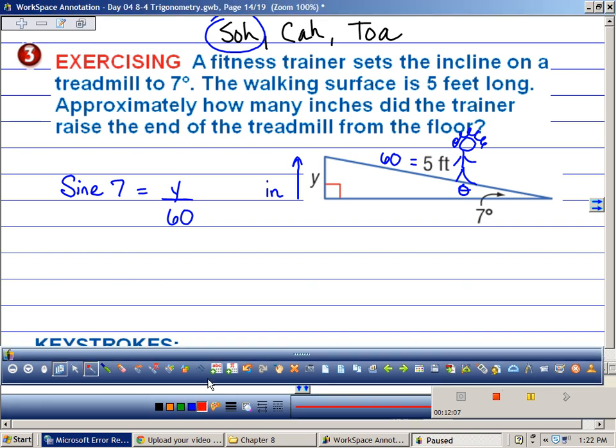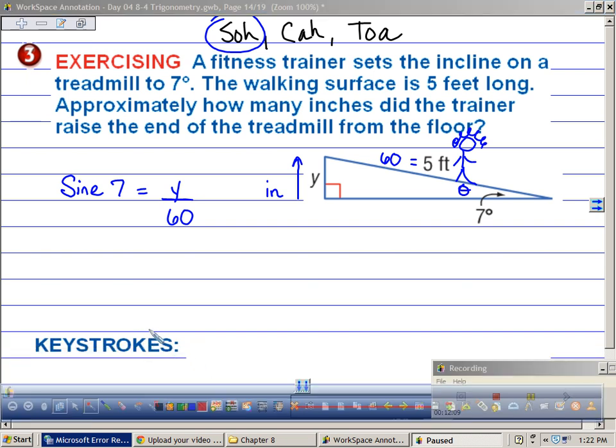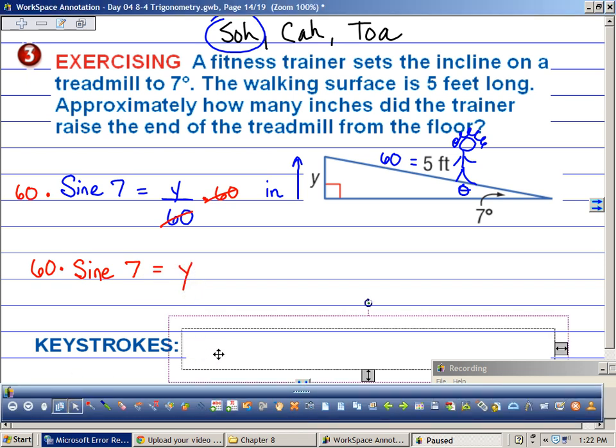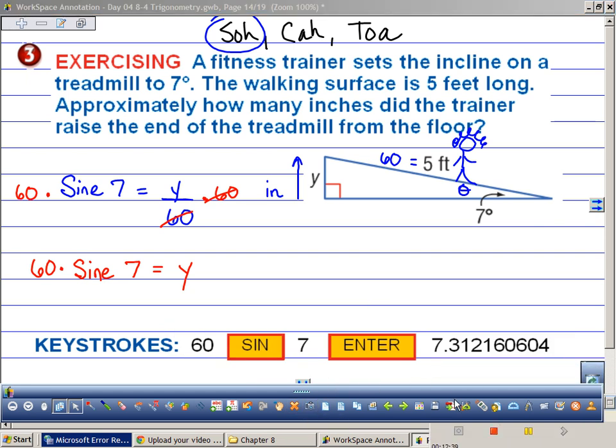How do I solve for y? I need to multiply both sides by 60. Isn't that how we get rid of fractions? Yeah. So my answer is 60 times sine 7 equals y. So this should look like this in your calculator. 60, push button, sine, 7, enter.